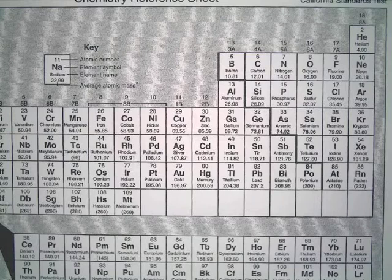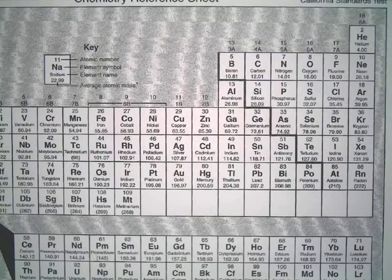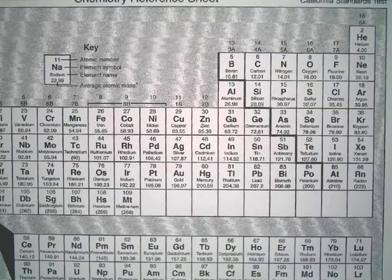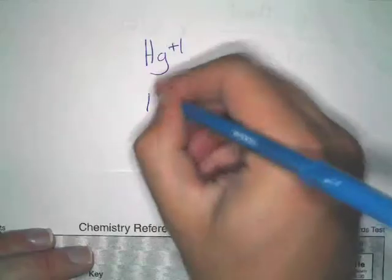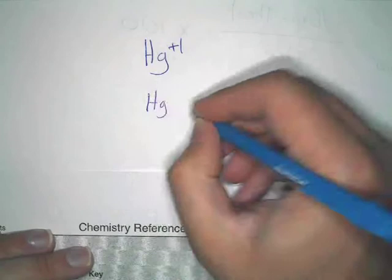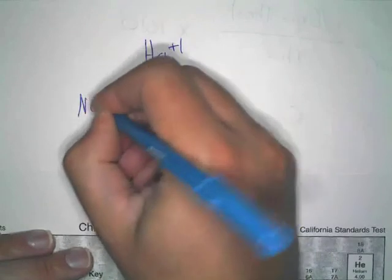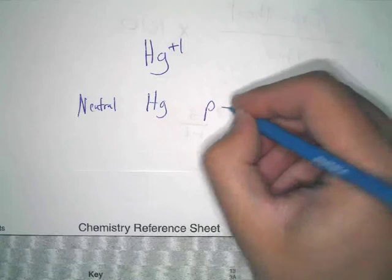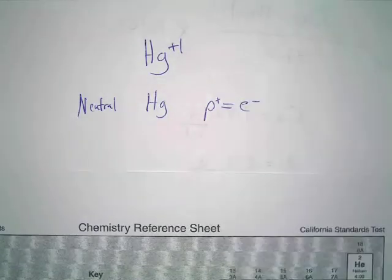So, mercury, what's its atomic number? 80. Now, if you wanted it to be neutral, if you wanted it to have no charge, so a neutral mercury atom, the number of protons must equal the number of electrons.